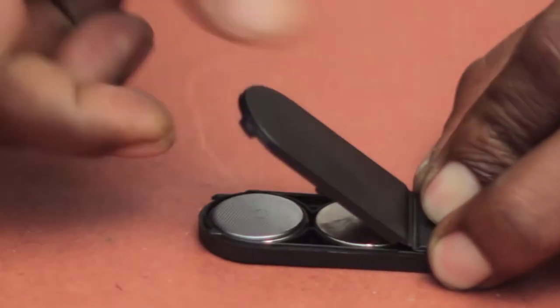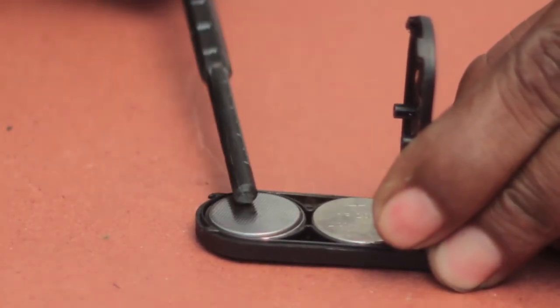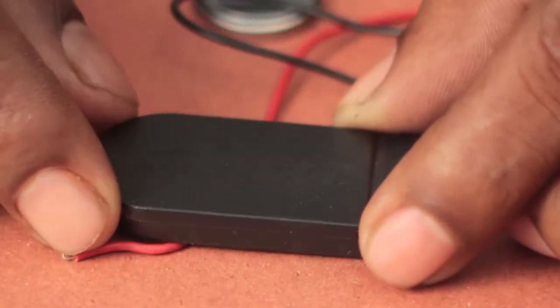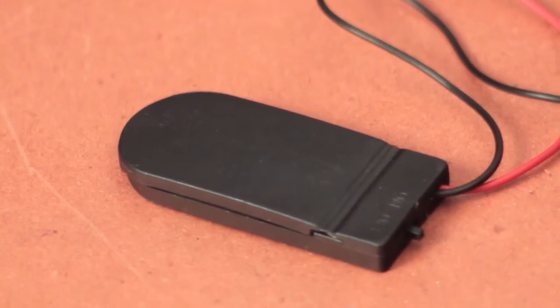It's compact and can accommodate two CR3032 button cells of 3 volt totaling 6 volt output. Let's see if we can use this battery holder to improvise some of our previous designs.